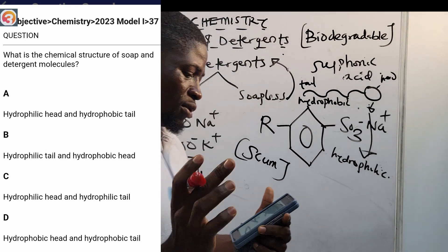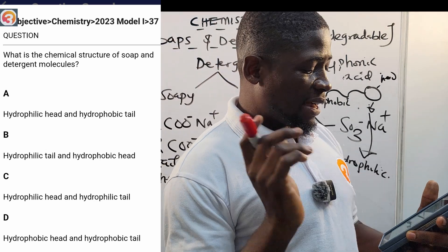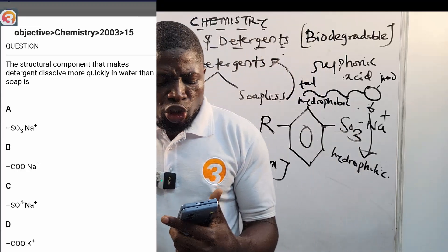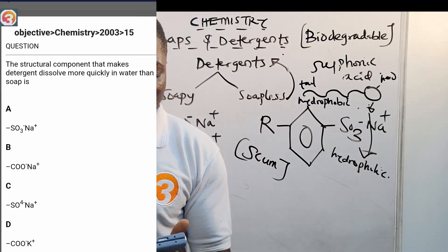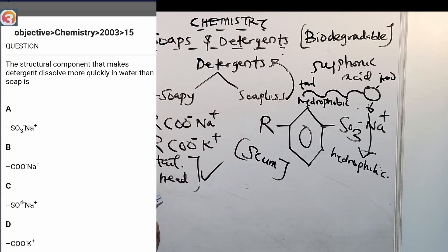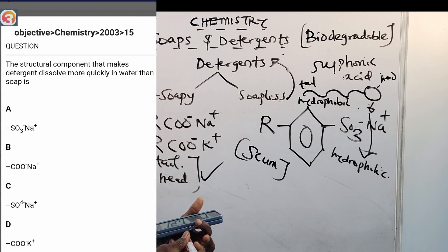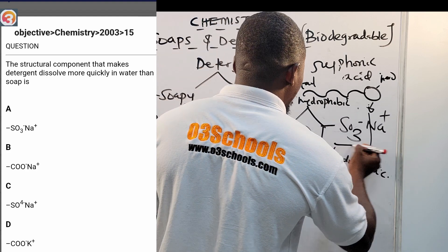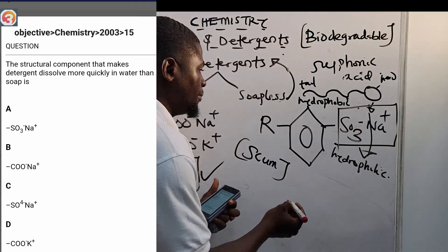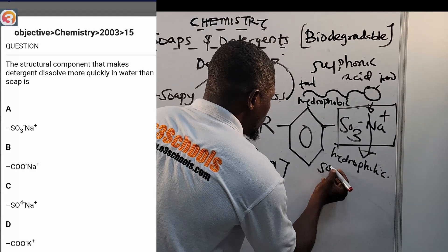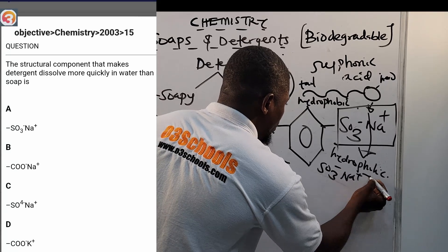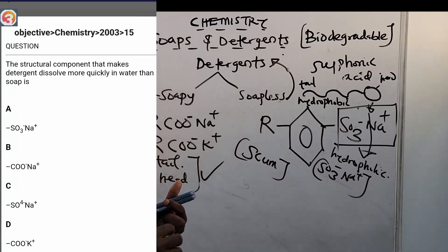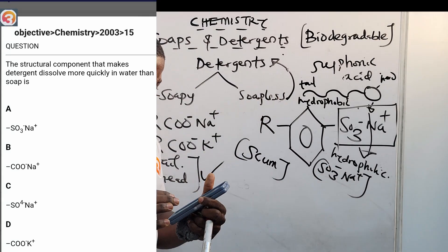2003, number 15: the structural component that makes detergent dissolve more quickly in water than soap is the possession of the sulfonic group, SO3⁻Na⁺. Correct answer is option A.